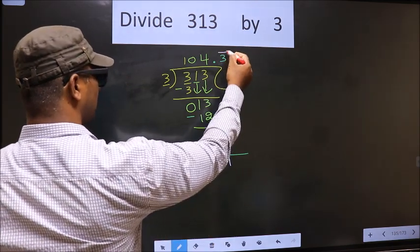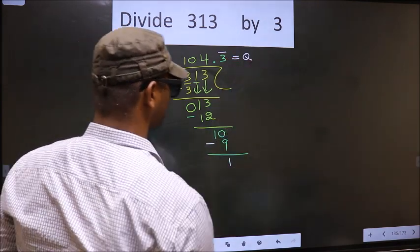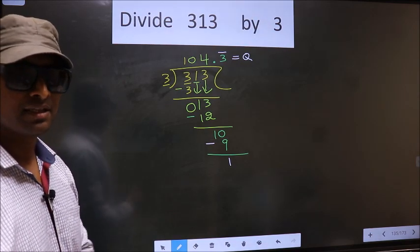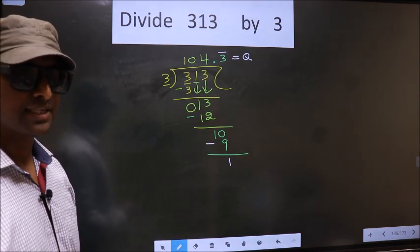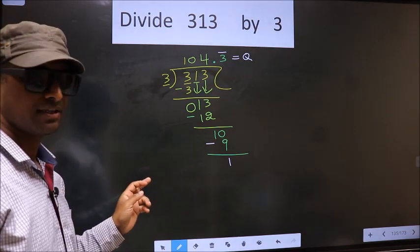That means we get a bar on this number, so this is our quotient. Did you understand where the mistake happens? You should not make that mistake.